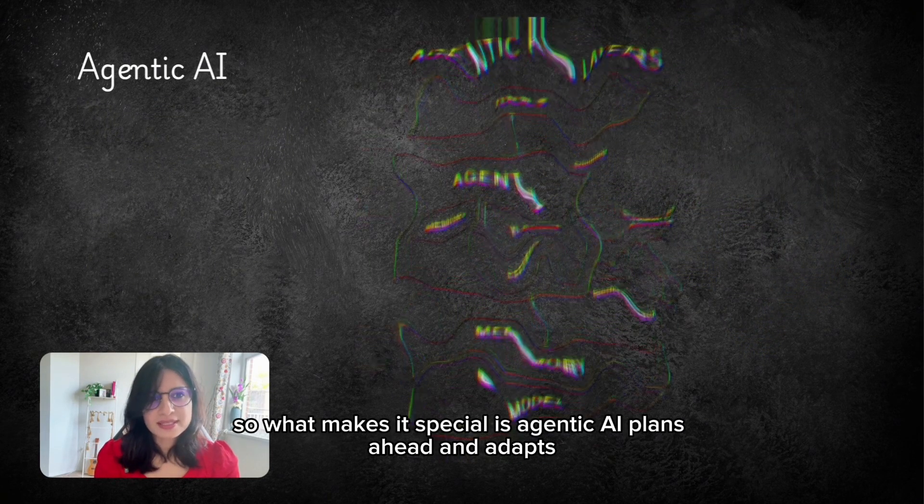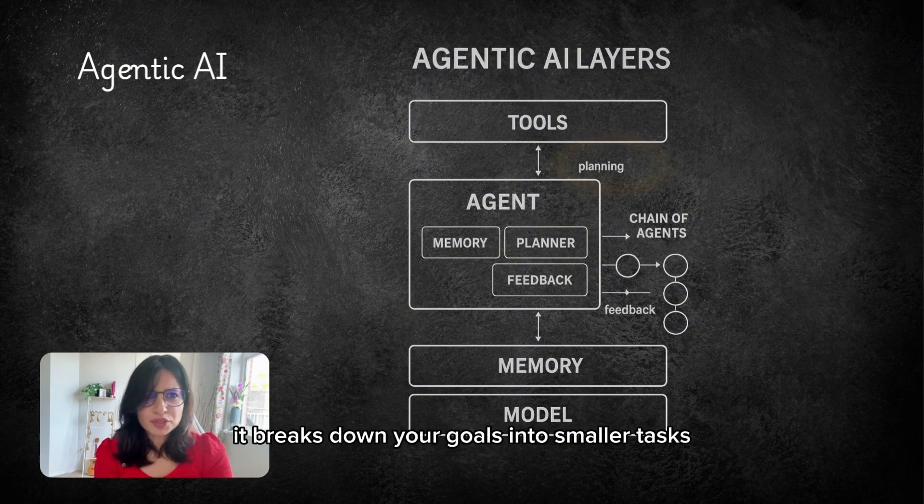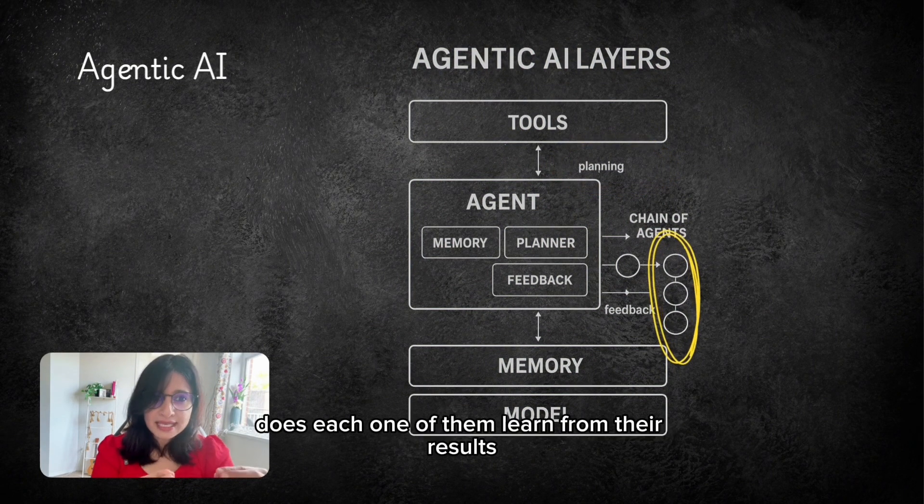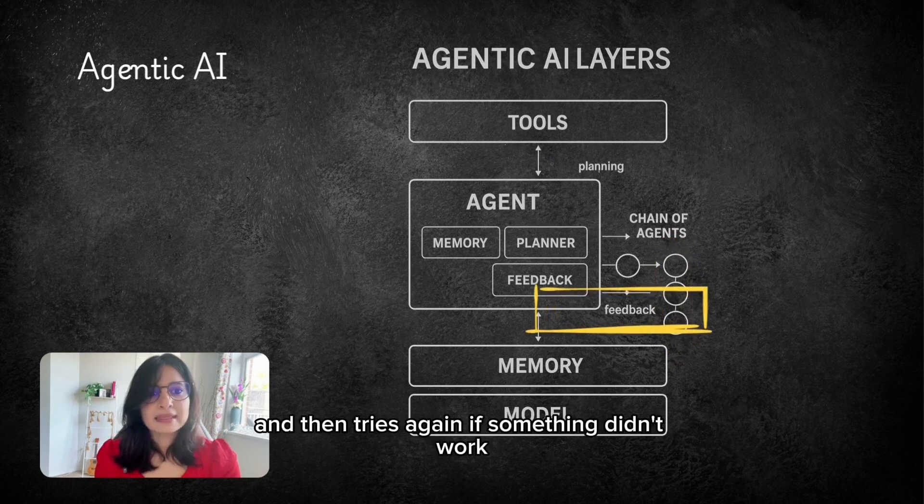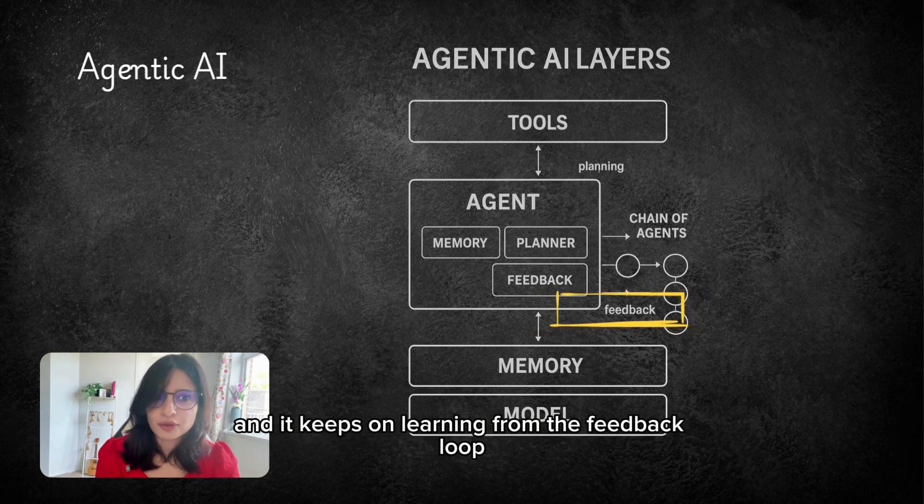So what makes it special is Agentic AI plans ahead and adapts. It breaks down your goals into smaller tasks, does each one of them, learns from their results and then tries again if something didn't work. So there's a feedback loop there which exists and it keeps on learning from the feedback loop.